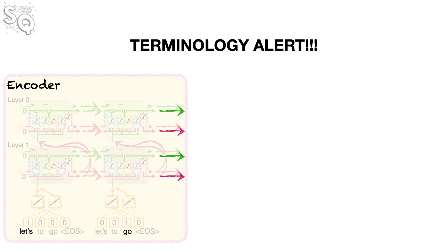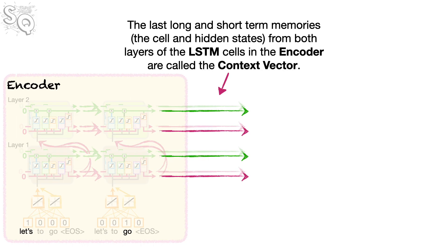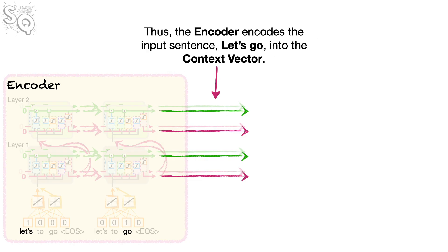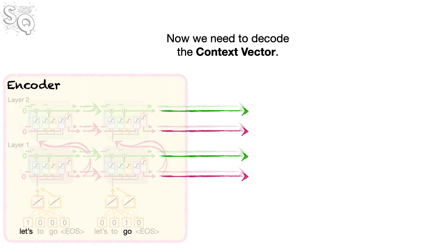It's the dreaded terminology alert again! The last long and short-term memories — the cell and hidden states — from both layers of the LSTM cells in the encoder are called the context vector. Thus, the encoder encodes the input sentence 'let's go' into the context vector. Now we need to decode the context vector.